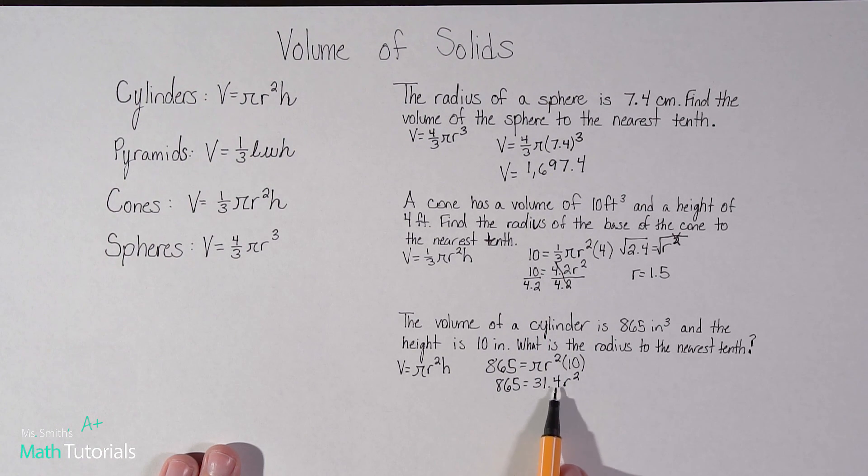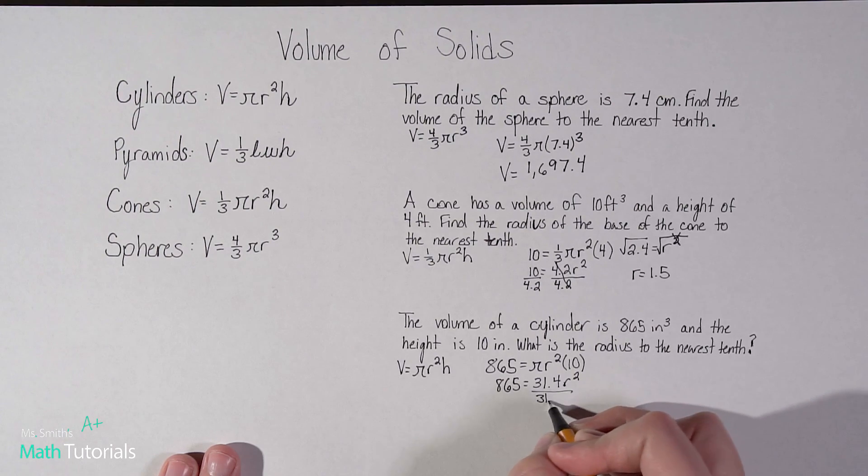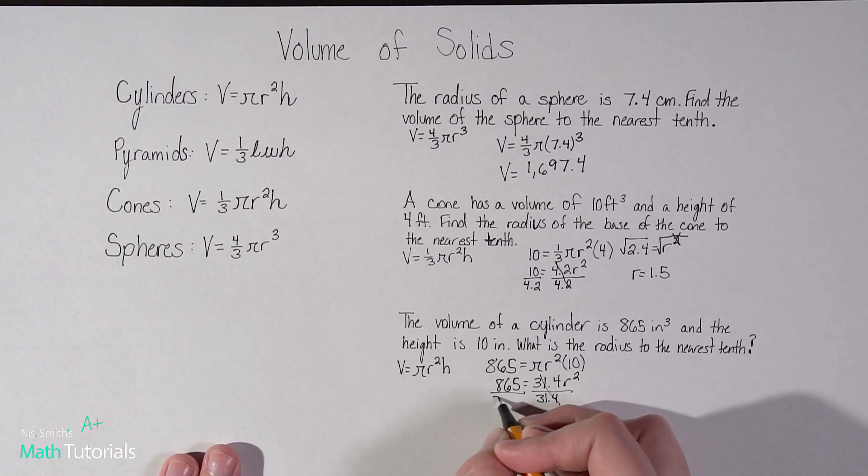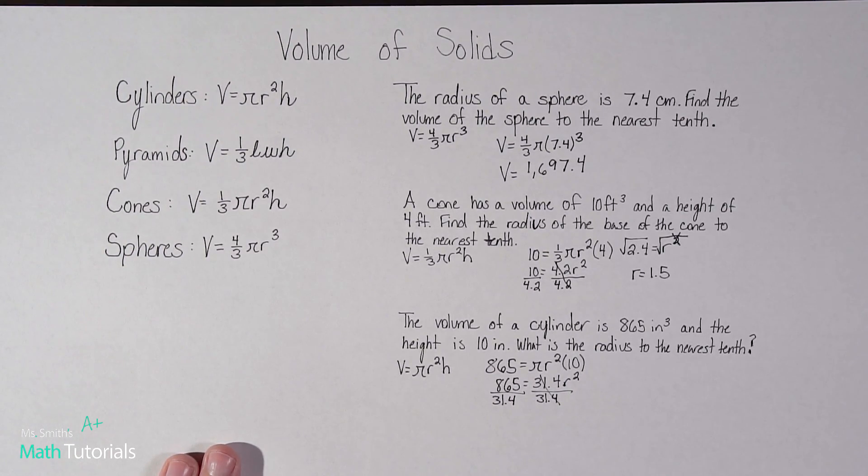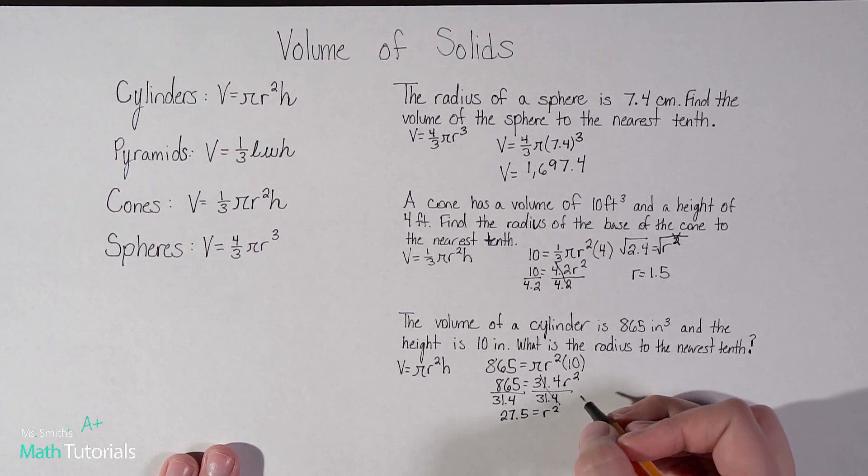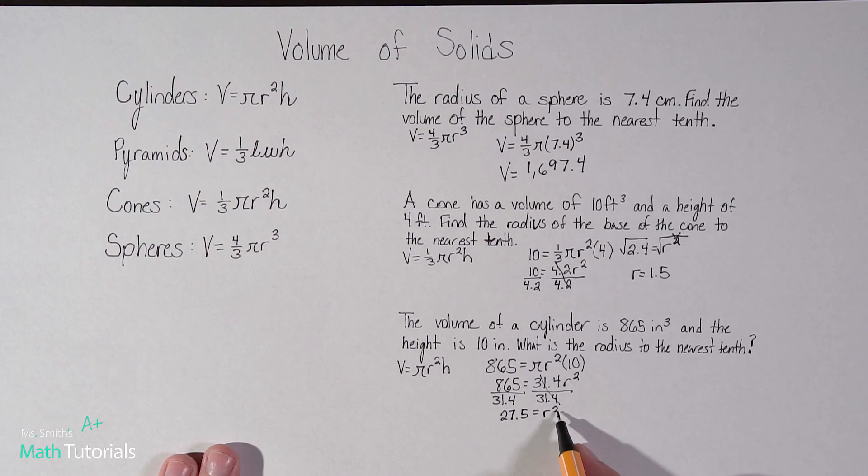So just like here, this is 31.4 times R squared. So how do we undo times? Well, we divide. So those two cancel. What I do to one side, I have to do to the other. Now, 865 divided by 31.4. That would give me a long decimal. I'm going to round to 27.5 equals R squared. But I don't want to know what R squared is. I want to know what R is. So again, how do I undo a square? Well, you take the square root. Cancels out the little square. So if I do that to one side, I have to do it to the other, the square root of 27.5 would be, it would be R equals 5.2.